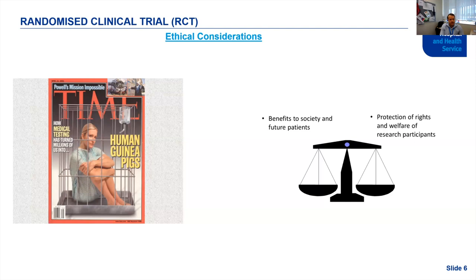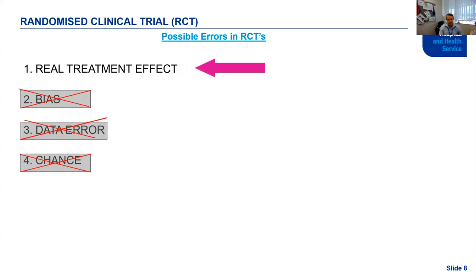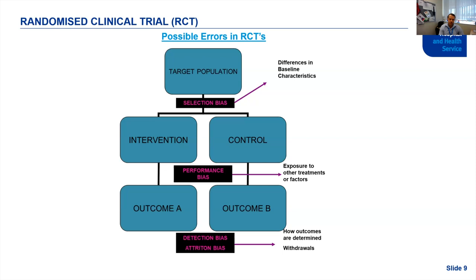I want to touch on what investigators are actually trying to achieve in an RCT. When we conduct a randomized controlled trial and get an outcome, the outcome is usually attributable to one of four things: the treatment had a real effect; there is bias; there is data error; or it happened by chance. As an investigator, I want to highlight real treatment effect and limit or mitigate any bias, data error, or chance.